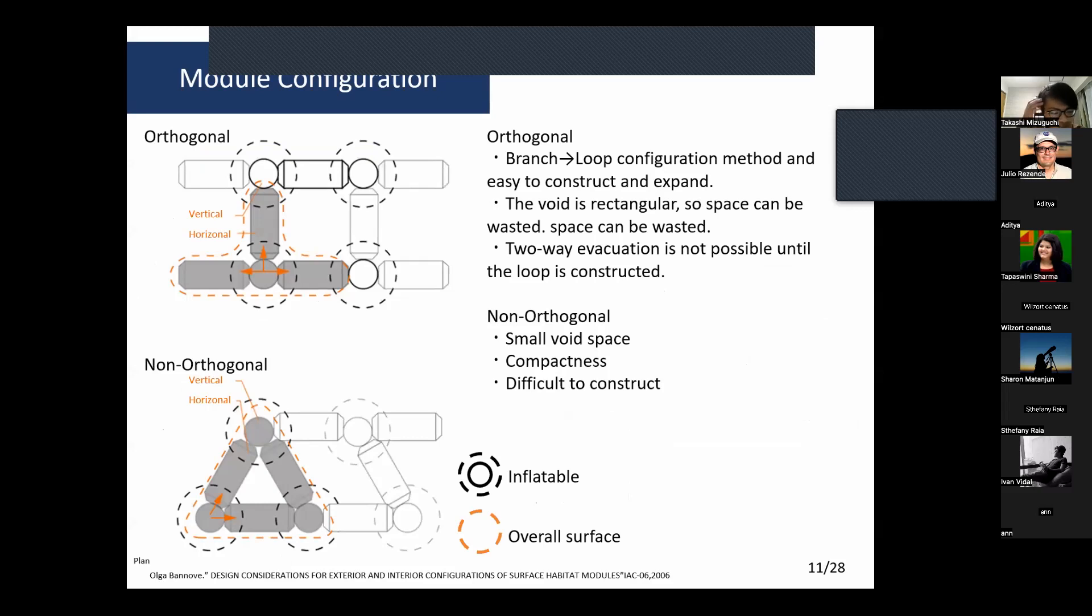For detached systems, there is also a difference between non-orthogonal and orthogonal configuration. Orthogonal configuration enables branch to loop configuration methods and is easy to construct and expand. Void space can be reduced, but two-way evacuation is not possible until the loop is constructed. Non-orthogonal has small void space and is compact, but is difficult to construct.